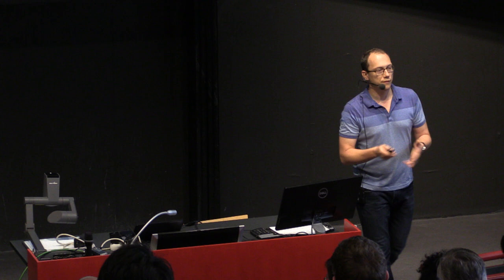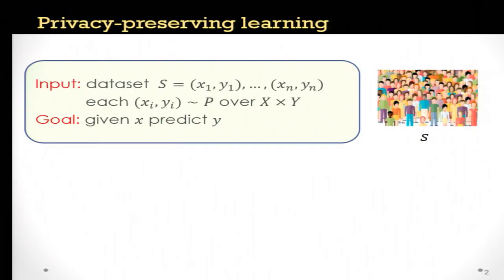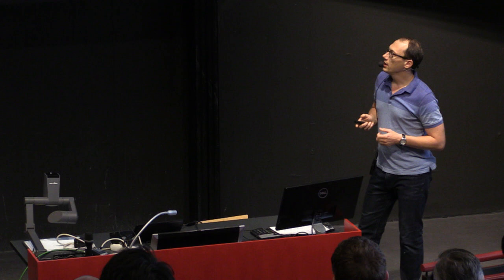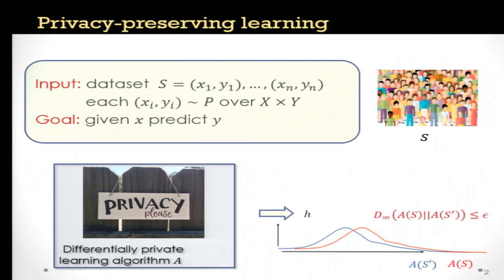The additional constraint we'll be interested in is that of privacy. Specifically, we'll think of our data as consisting of sensitive data of some individuals, and we need to make sure that our analysis preserves the privacy of these individuals. The standard approach to dealing with this problem is to use a differentially private learning algorithm.